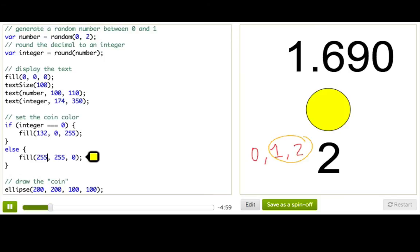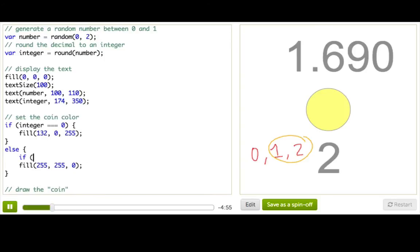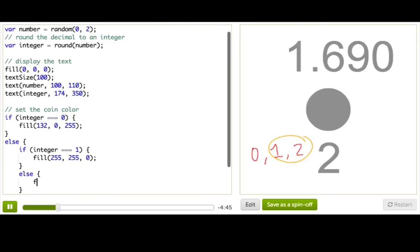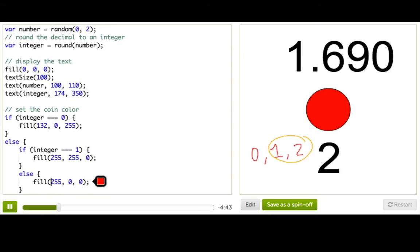But wait, what if I did the same thing that we did before but inside this else block? So I'm just going to say if integer is equal to 1, then set the fill color to be yellow, like it was before, else we will set the fill color to be red.